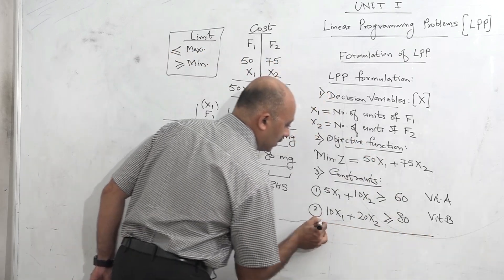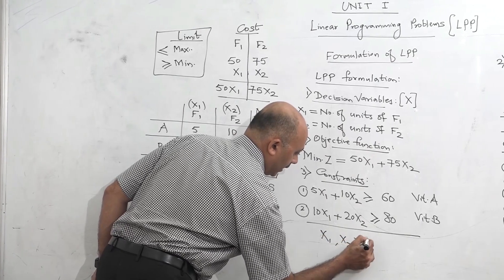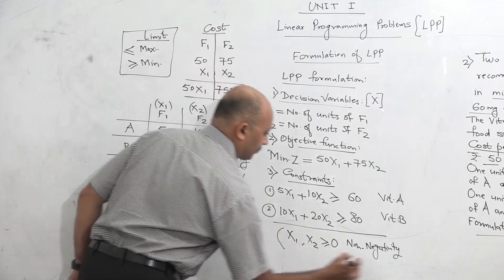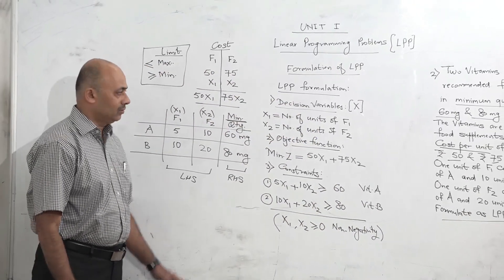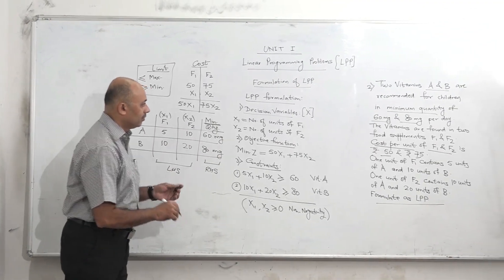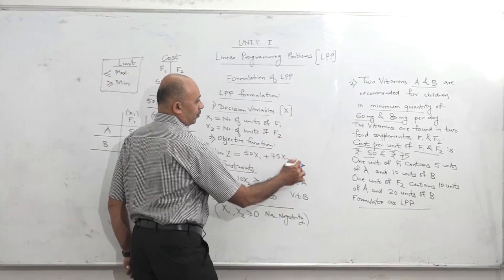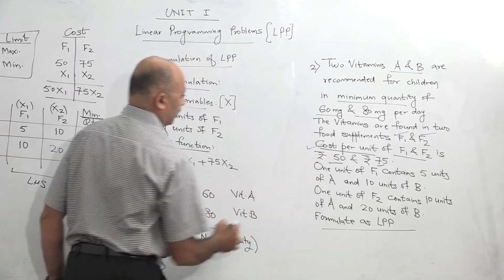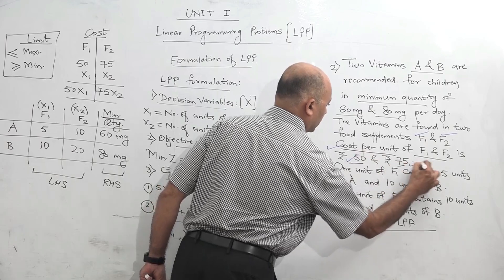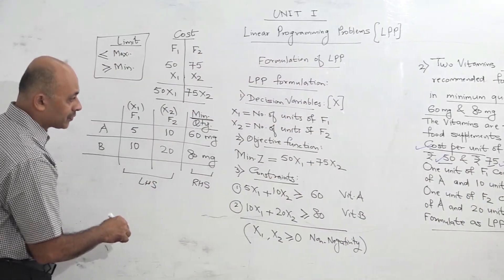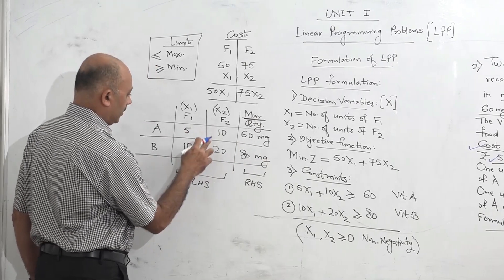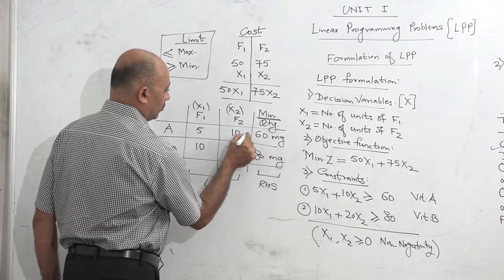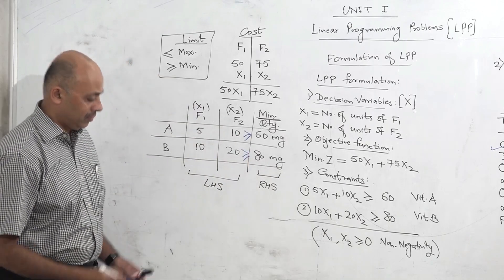Our formulation is complete. At the end, as a formality, we write the non-negativity constraint: x1, x2 greater than or equal to 0, meaning the variables should not be negative. Verifying: two products F1 and F2, cost given so objective function is min Z with cost 50 and 75. One unit of F1 contains 5 units of A and 10 units of B; one unit of F2 contains 10 units of A and 20 units of B. Limits for A and B are 60 and 80, which are minimum limits, so the sign of the constraint is greater than or equal to. Formulation is complete.